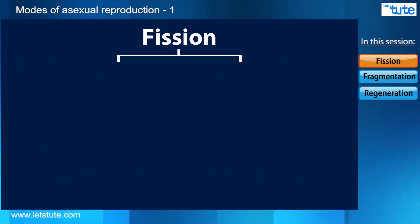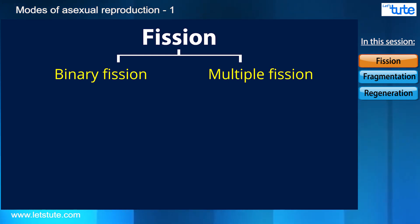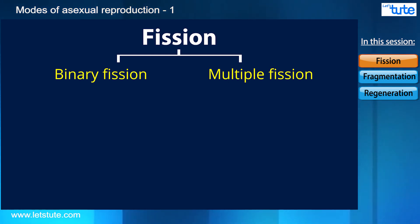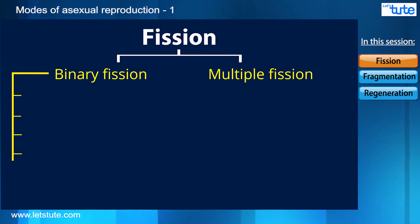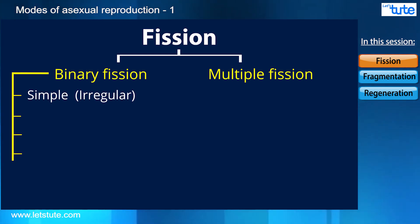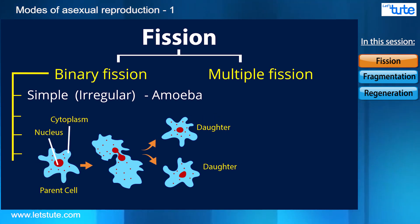Fission is broadly categorized into two major categories: binary fission and multiple fission. In binary fission, as the word suggests — 'binary' meaning two — the parent cell divides itself into two daughter cells. Binary fission is further divided into four methods depending on the parent body's structure and organization. The first is simple binary fission, where fission of the parent body occurs on any axis or plane. The example is amoeba, a unicellular organism with an irregular-shaped body.